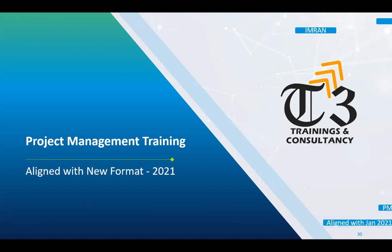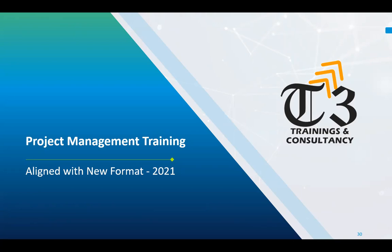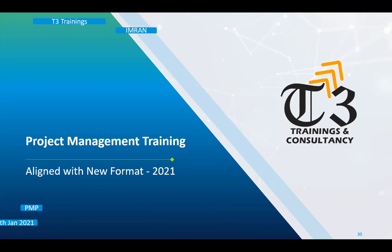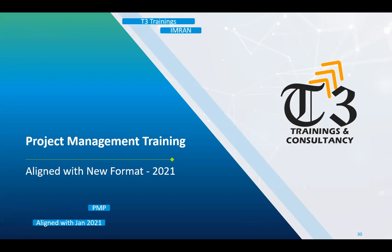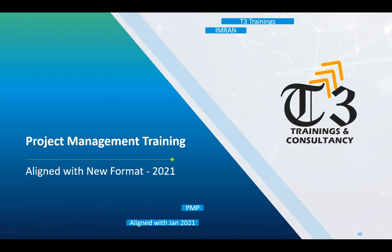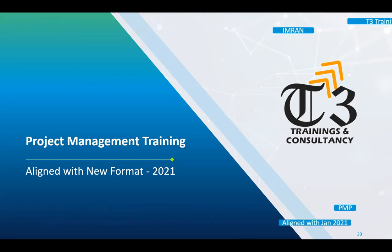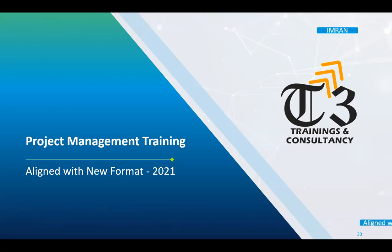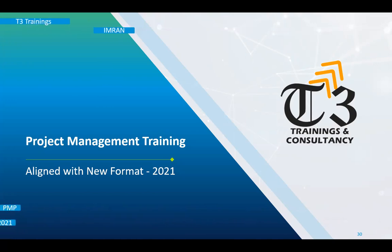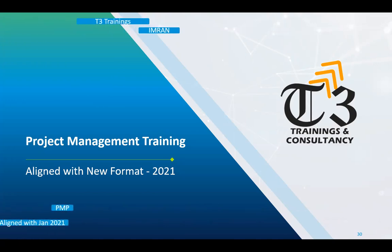Hello and welcome to day three video. Today chapter three will be discussed for review, covering the role of project managers. There are five roles for project managers: role towards project, organization, industry, professional discipline, and across disciplines. We also have three skills: technical project management, strategic business management, and leadership skills, with six leadership styles discussed in this chapter.